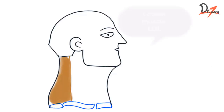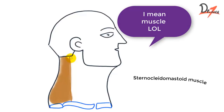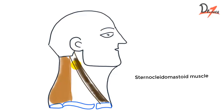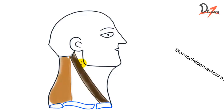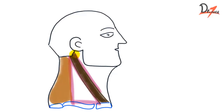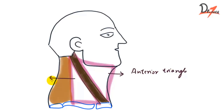We also have one more muscle and that is the sternocleidomastoid. So now when we have made this muscle, we can appreciate two triangles. We have one triangle anteriorly and one triangle posteriorly. This muscle — the sternocleidomastoid — divides the neck into two triangles: the anterior triangle and the posterior triangle.